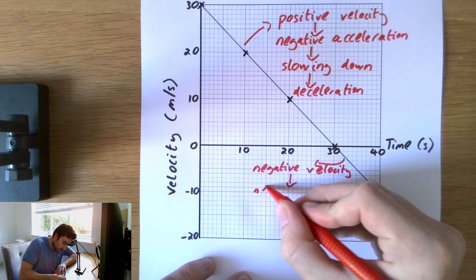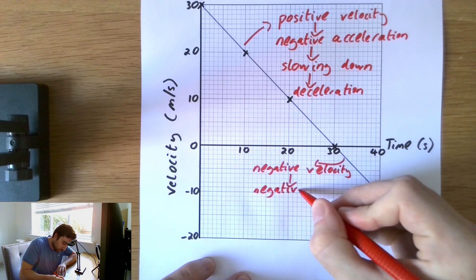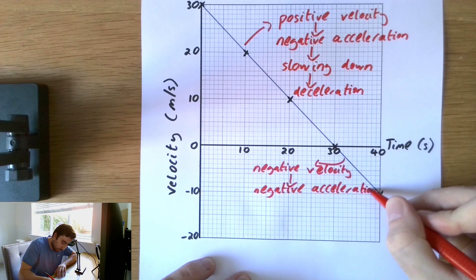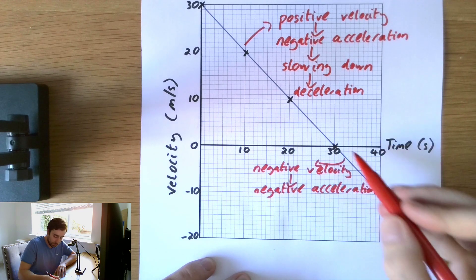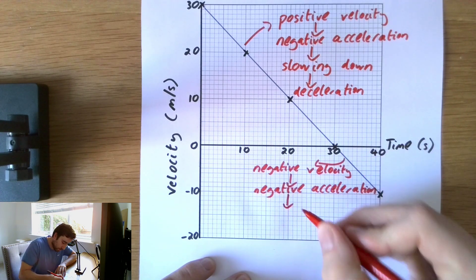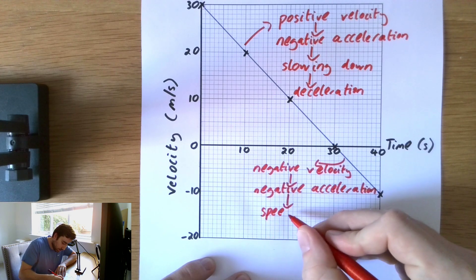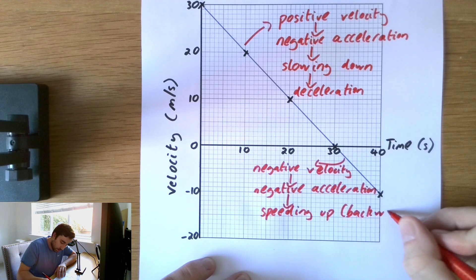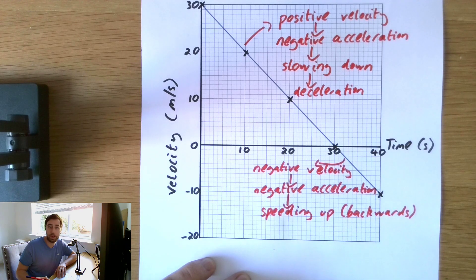We're still applying the same force, so we still have a negative acceleration. But in this part here, we can now see that the object is speeding up, albeit it is speeding up backwards.